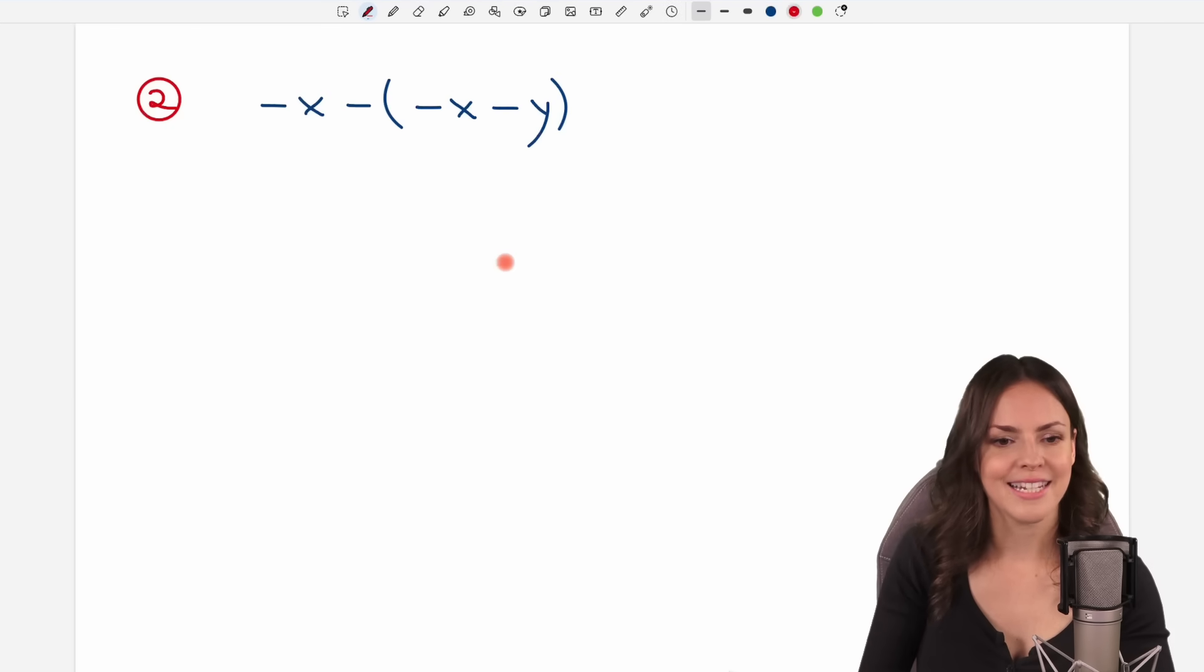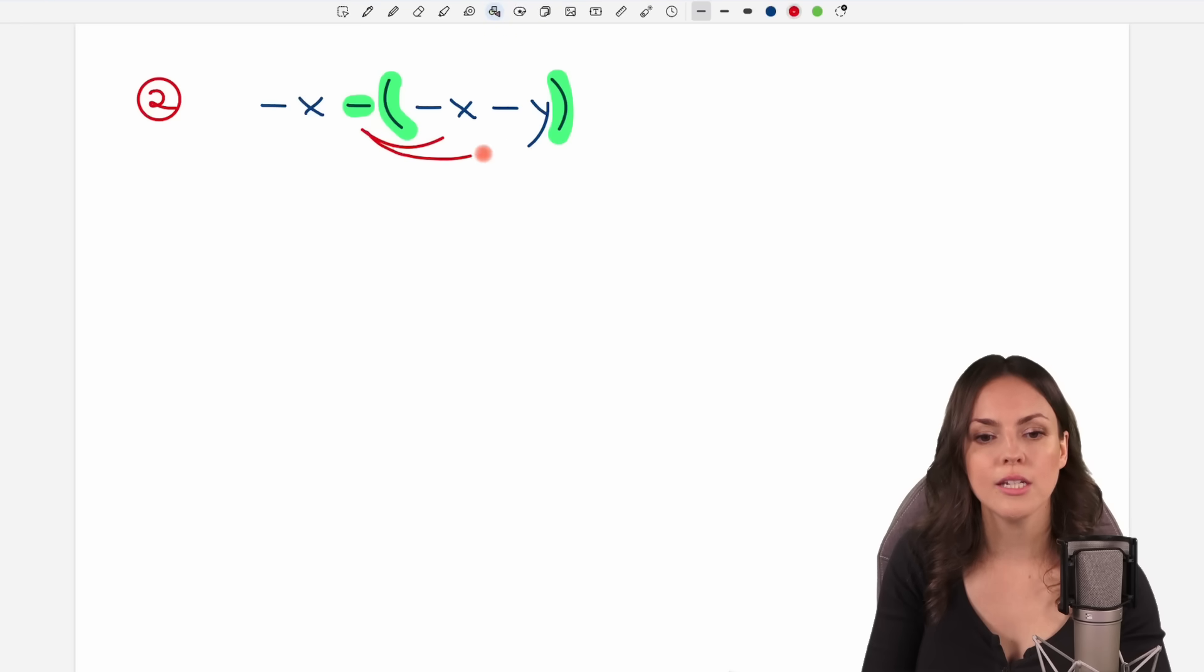Okay, let's take a look at the second example. We have minus x minus and then we have these parentheses. We want to get rid of the parentheses and we have a minus in front of them, so same thing. We apply the minus to each element inside my parentheses. The negative x here in front has nothing to do with my green part here, so I just write the negative x down.